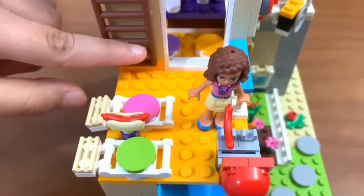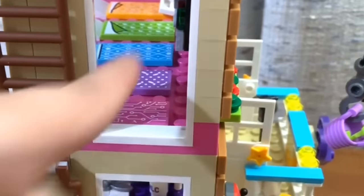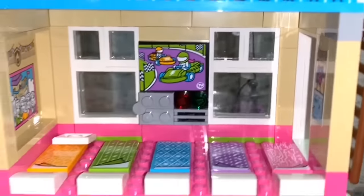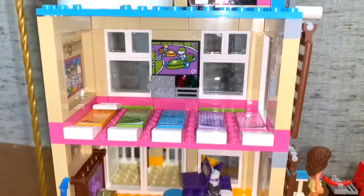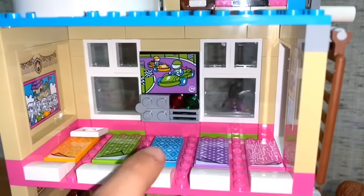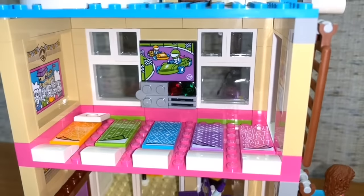If we go up the ladder a few, we can go into our next level. On this level, what we have are the five beds for the five girls. We have Andrea, Mia, Stephanie, Emma, and Olivia. And each one has their own design in their bed.